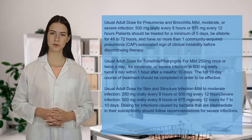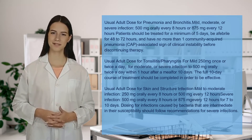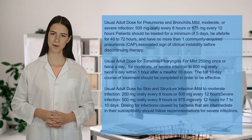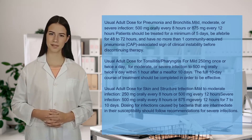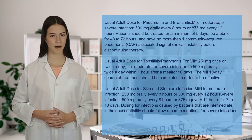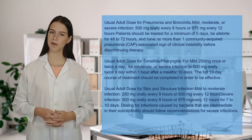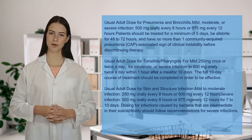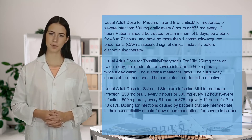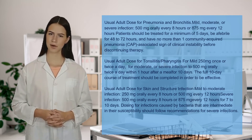Usual adult dose for tonsillitis/pharyngitis. For mild infection: 250 mg once or twice a day. For moderate or severe infection: 500 mg orally twice a day within one hour after a meal for 10 days.